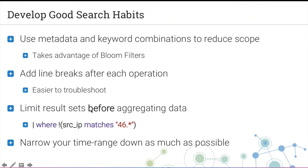Limit your result sets before doing any aggregation. If you're aware of a large chunk of data you don't need, exclude it; or if there's certain data you want to focus on, include only that. This makes your queries run much faster. Also narrow your time range as much as possible — if your data only happened within a five-minute window, just look at those five minutes.